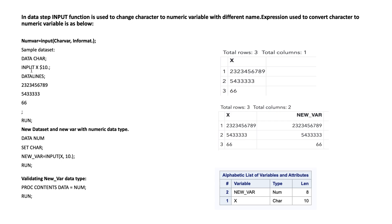A sample dataset named 'char_input' has three rows and one variable X. When we run the first set of code it generates the dataset with one variable and three rows. The second set of code converts the character variable to a numeric variable using 'data num; set char_input'.